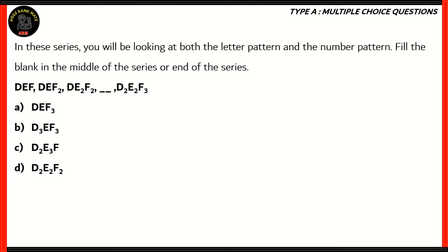Now let's look at the final question for the day. It's part of the series questions. Here in this particular series, we have a letter and number pattern, and the blank is in the middle of the series. Earlier the blank was at the end and there was only a letter pattern; now we have a number pattern as well. The pattern is: DEF, DEF2, DE2F2, blank, D2E2F3.